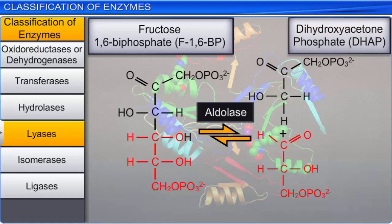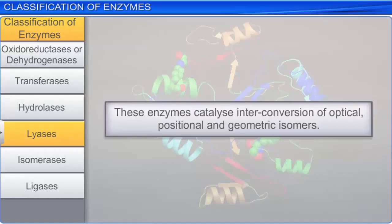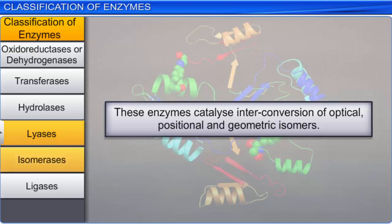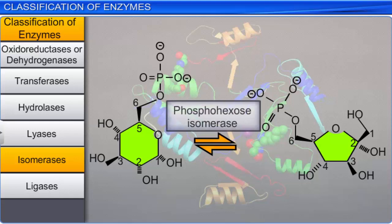The fifth class of enzymes, called isomerases, catalyzes the interconversion of optical, positional, and geometric isomers. For example, during glycolysis, phosphohexose isomerase catalyzes the conversion of glucose 6-phosphate to fructose 6-phosphate.